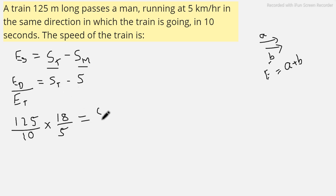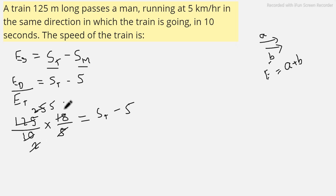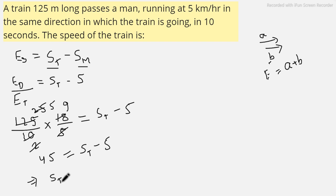Setting up the equation: the effective speed in km/h equals the speed of the train minus 5. Calculating 125 divided by 10, then multiplied by 18/5, gives 45. So: 45 equals speed of train minus 5, which means the speed of the train equals 45 plus 5, that is 50 kilometers per hour. This is our answer.